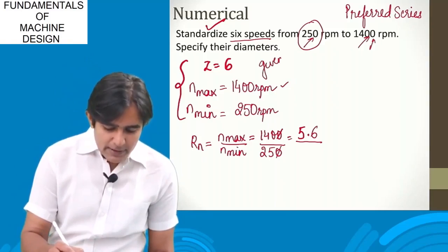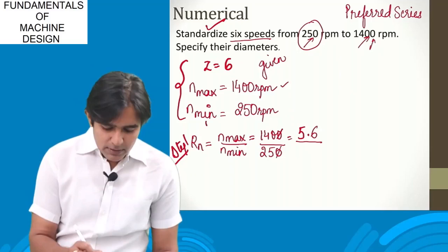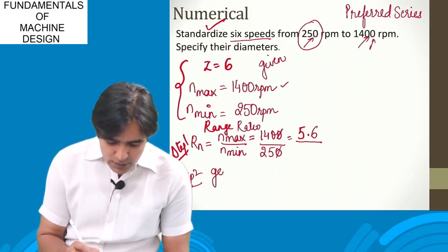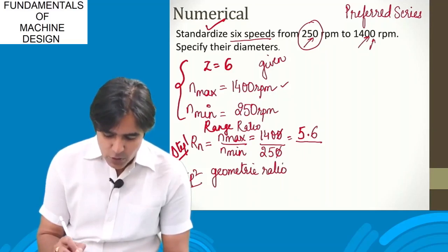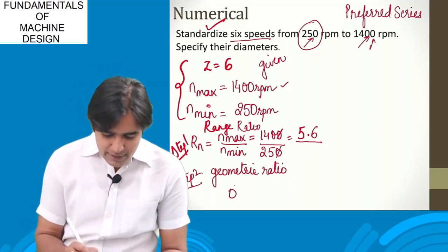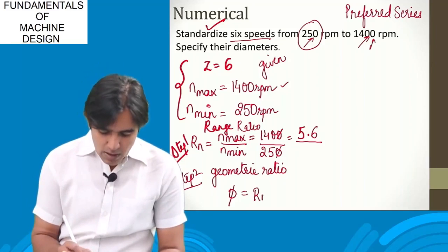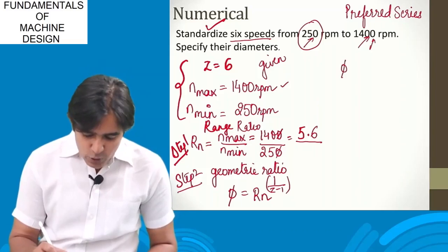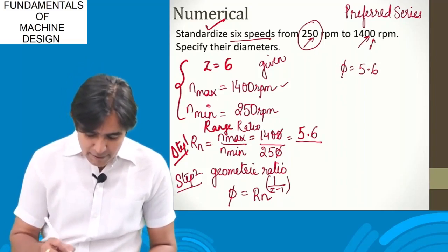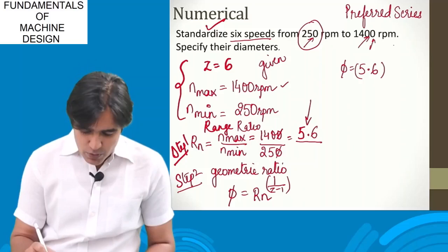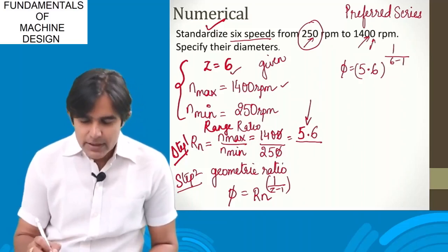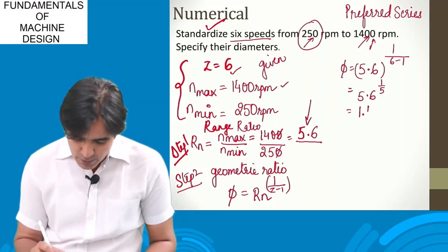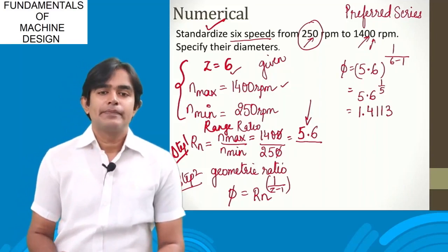In step 2, find the geometric progression ratio (also called the step ratio). The formula is φ = Rn^(1/(Z−1)). Substituting: φ = 5.6^(1/(6−1)) = 5.6^(1/5). Calculating this gives φ = 1.4113.